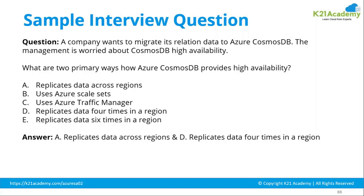Azure Scale Sets are typically used for the web tier and middle tier, not for the database, because databases have their own licensing cost. A database cannot scale like a web application where another VM auto-scales automatically — that is not a database concept. So B, C, and E are out. Cosmos DB provides replication cross-region, so A has to be there. And if you have read the documentation correctly, it also replicates data four times in a region — so A and D are correct.